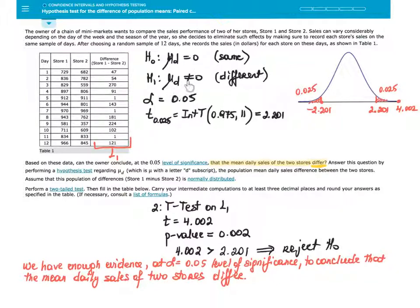Alternatively, mu sub d could be not equal to zero, which means there is some difference between the two sales on average again. I'm stating my alpha of 5%, and I'm now going to find the critical value t sub 0.025. This particular example is asking you for a critical value approach to solving this hypothesis test question.